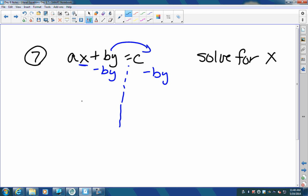I get AX equals C minus BY. Now to get X by itself, now you have to divide by A. So we have X equals C minus BY all divided by A.